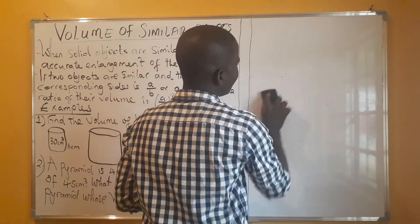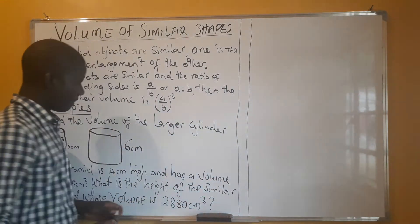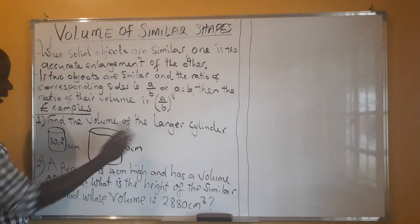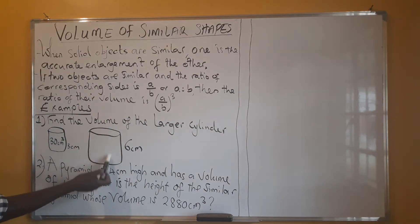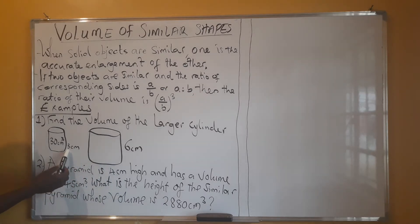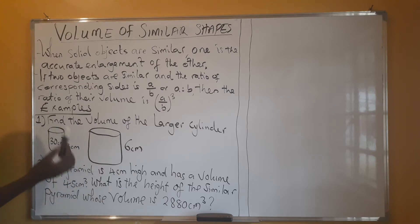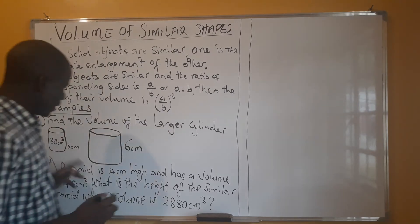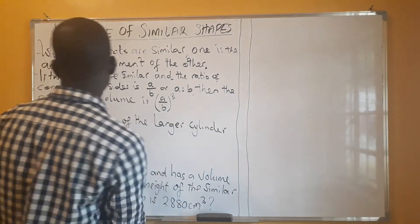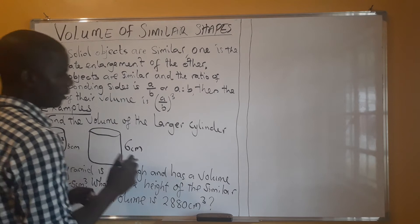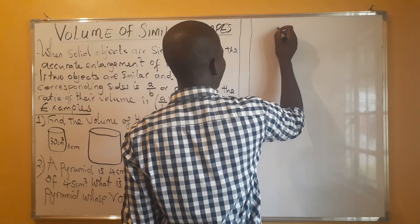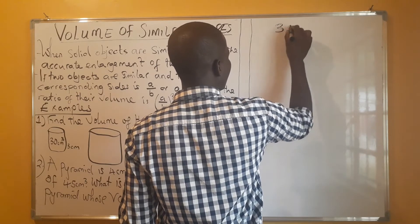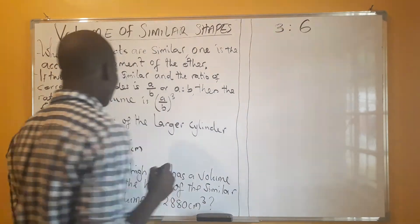Let's look at question one: find the volume of the larger cylinder. The first, smaller cylinder has a height of 3 centimeters and a volume of 30 centimeters cubed. We want the volume of the larger one. The ratios of the two cylinders that are given are 3 to 6.